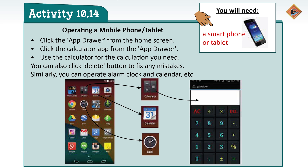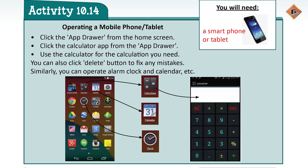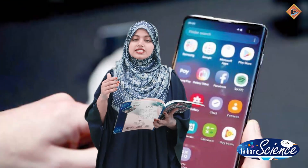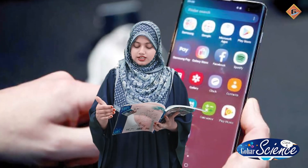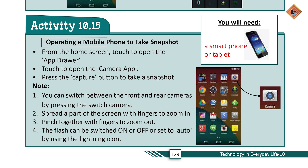Ab aap ek activity perform karenge. Apne mobile phone mein app drawer pe click karna hai, calculator open karna hai, aur saath hi apna alarm clock bhi open karna hai. Apne ammi ka mobile phone unki ijaazat se lena hai — unki ijaazat ke baghair nahi lena. Unke paas bethna hai aur unse poochna hai: 'Mama, is mobile phone mein alarm kaisa lagaun? Calendar kaisa open karun?' Mujhe umeed hai aap sab logon ko yeh cheezein aati hongi, lekin agar nahi aati to apni ammi se poochen. Kuch calculations bhi karni hain calculator khol ke.